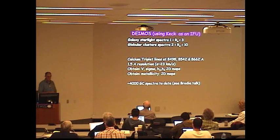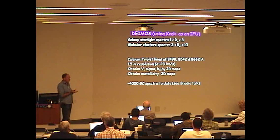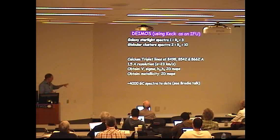It's a very stable spectrograph and from that we can obtain velocity, sigma, the higher order moments h3, h4 in 2D maps and also get some metallicity 2D maps. We've got about 4,000 globular cluster spectra to date.